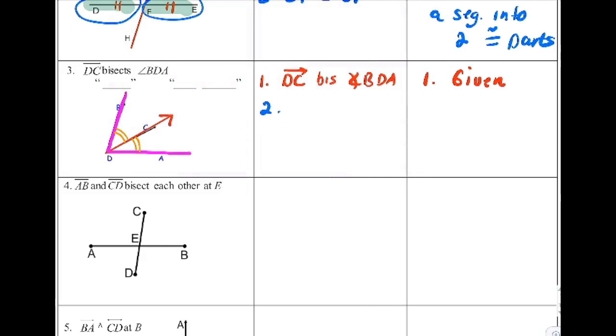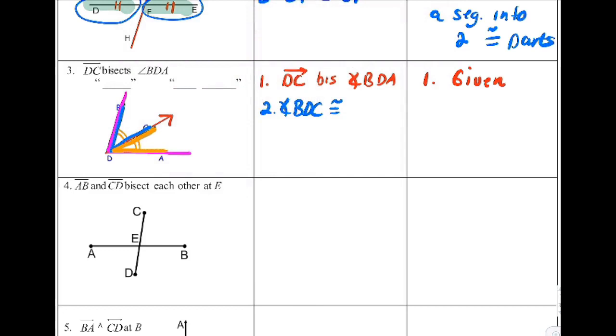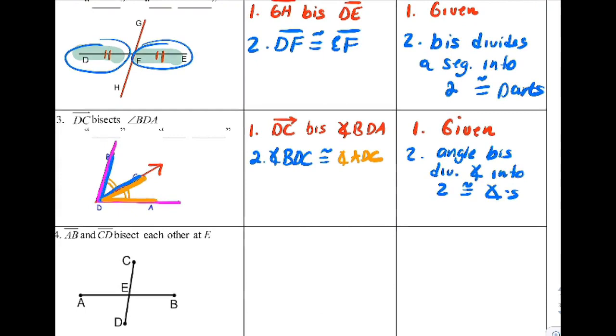The second thing I can say is that this angle right here and this angle right here are equal. What angles are they? This one here is called BDC, and that's congruent to this one, which is ADC. Why is that true? Because an angle bisector divides an angle into two congruent angles. Almost the same wording as above except instead of segments, we say angles.